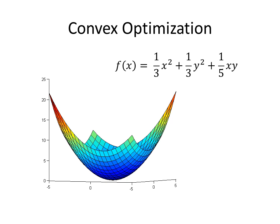This video lecture is on the conjugate gradient method. The conjugate gradient method is useful for solving convex optimization problems. This means that we have some f, in this case one-third x squared plus one-third y squared plus one-fifth xy, and we would like to find its minimum.